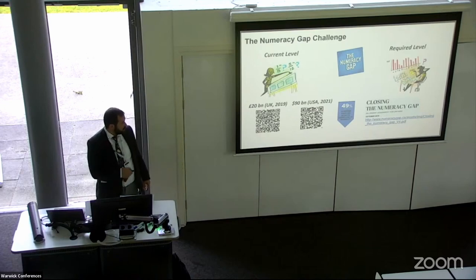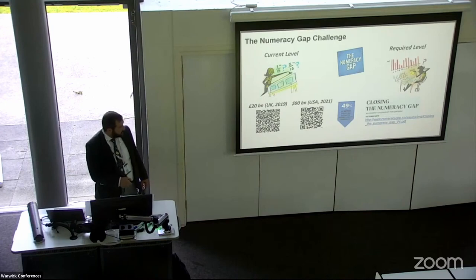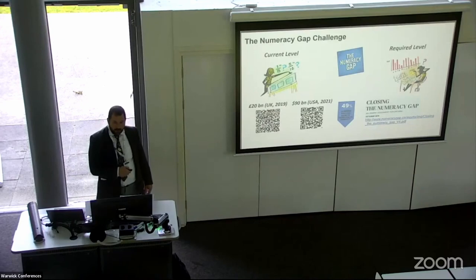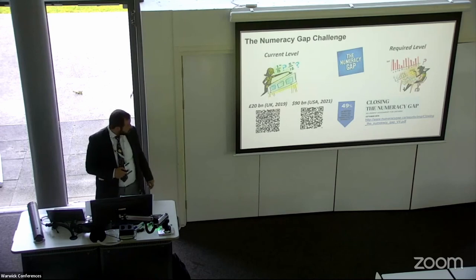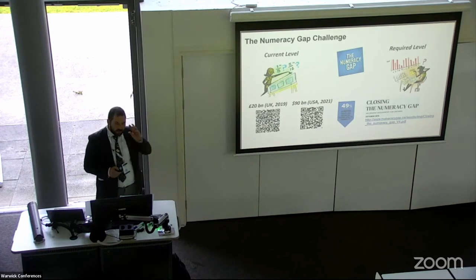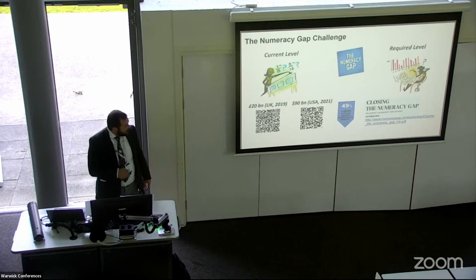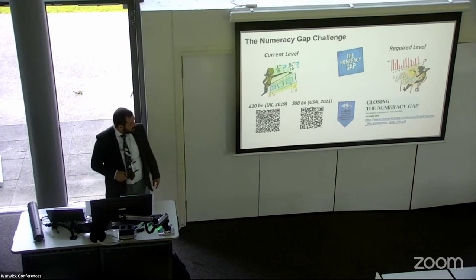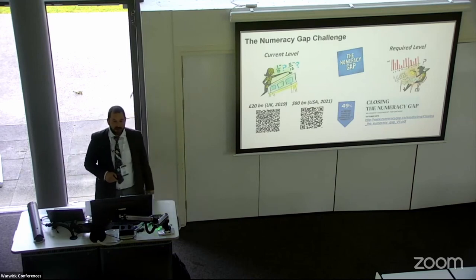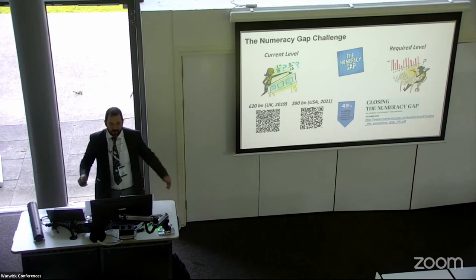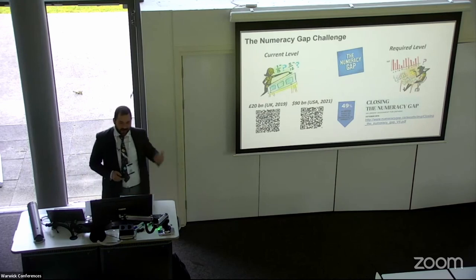We did some research and found sobering findings by National Numeracy. The impact on the UK economy in a study from 2019 was estimated at £20 billion — small errors that administrators make in spreadsheets because numbers don't make sense to them and they're not great with problem solving. In the States, the impact was around $100 billion. This same 2019 study highlighted that about half of adults in the UK are not numerate — and yet we want to develop new technologies, innovation, and AI.